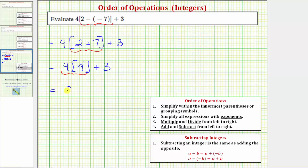So the expression is equal to 36 plus three. Of course, we only have one operation left, which takes us to the last step of the order of operations. Step four, add and subtract from left to right, and 36 plus three equals 39.